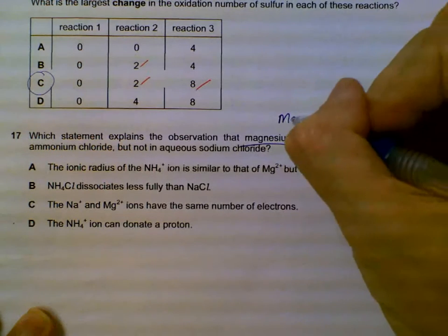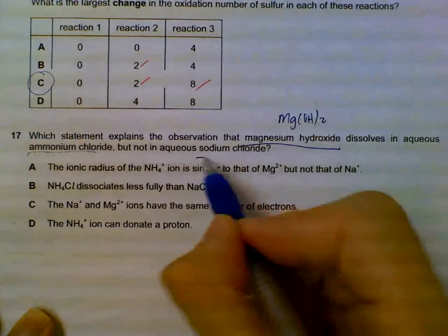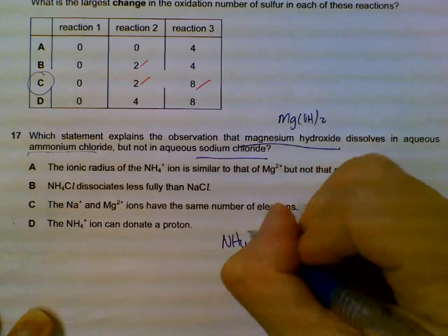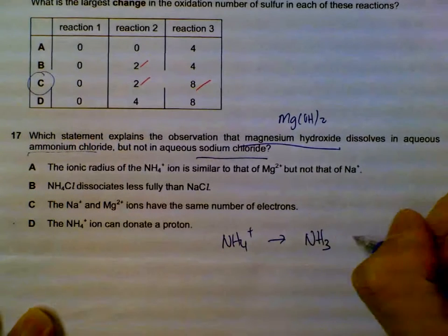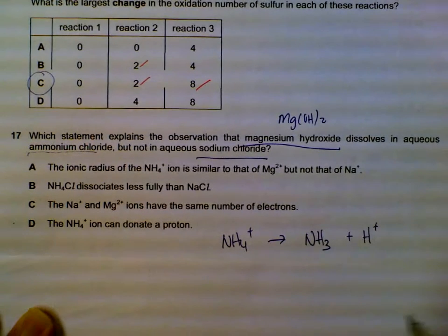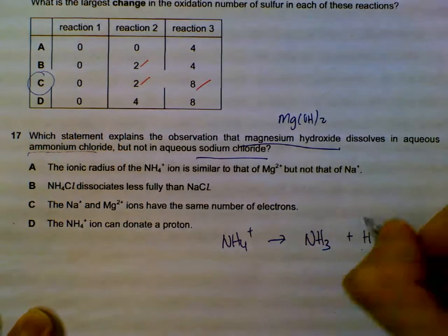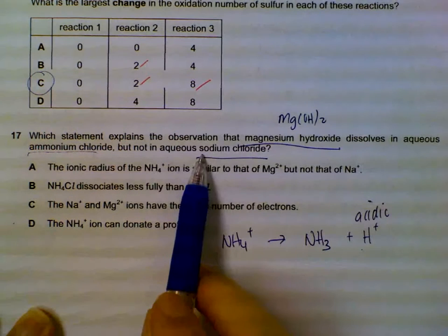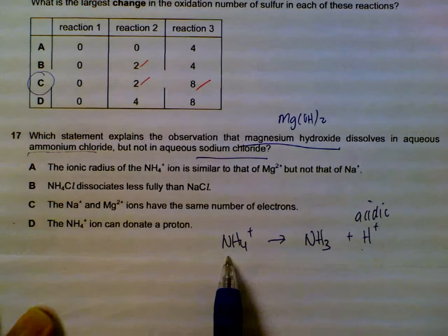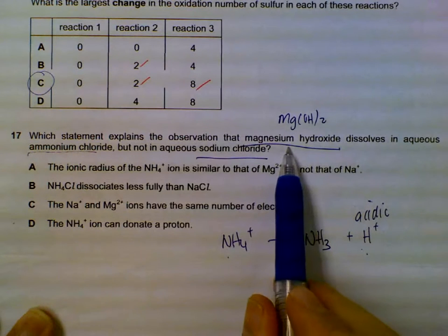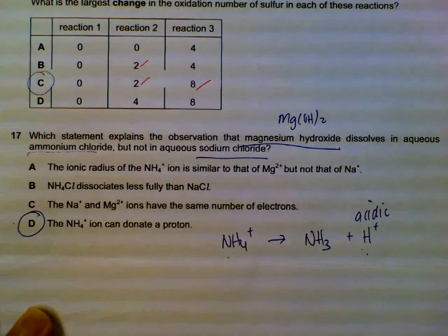Question 17: which explains why magnesium hydroxide dissolves in ammonium chloride? What's special about ammonium chloride that is not present in sodium chloride? NH₄⁺, when it dissolves, can give up hydrogen ions — protons — meaning there is a chance it will cause the solution to be acidic. Sodium does not donate H⁺, so ammonium chloride solution is actually acidic and will dissolve magnesium hydroxide, which is a base. NH₄⁺ ions can donate a proton.